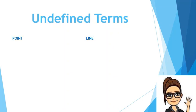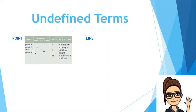A point is represented by a dot. It can be named using a capital letter. Look at the graphical representation — we have three points. We use a dot followed by capital letter A to name point A, a dot followed by capital letter G to name point G, and a dot followed by capital letter M to name point M. Remember, a point has no length, width, or height — it indicates a position.